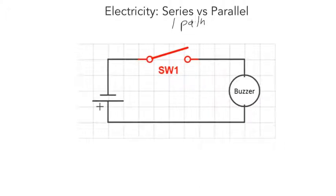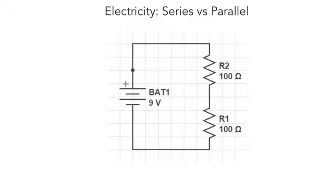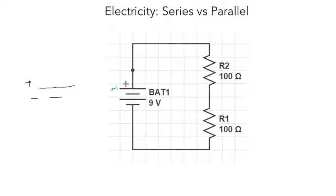We're going to look at another example of a series circuit that's a bit more complex. Here we have another series circuit. We have a power source — in this case a battery. The difference between a power source and a battery: a battery has two long parallel lines and two short parallel lines, whereas a power source has one long parallel line and one short parallel line. The long line on top is your positive terminal and the short line is your negative terminal. Following the path of the electron starting from our battery, going through the first resistor, through the second resistor, and then back to the power supply — another example of a series circuit.